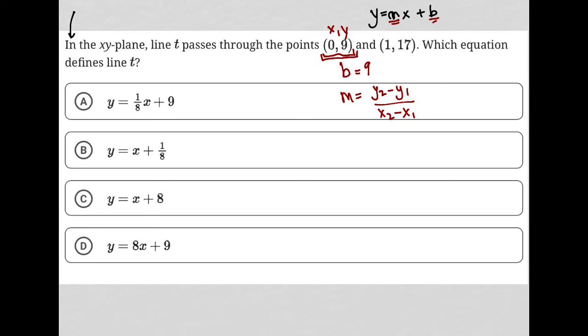This is my x1 and y1. This is my x2 and y2. I just have to plug those in. So I have 17 minus 9 over 1 minus 0, which equals 8 over 1, which is 8.